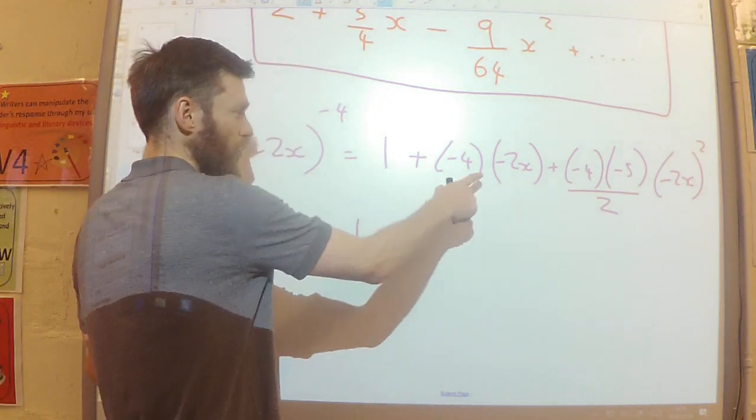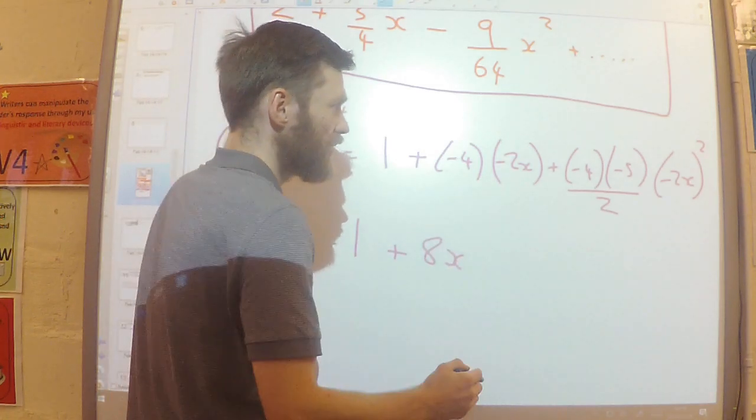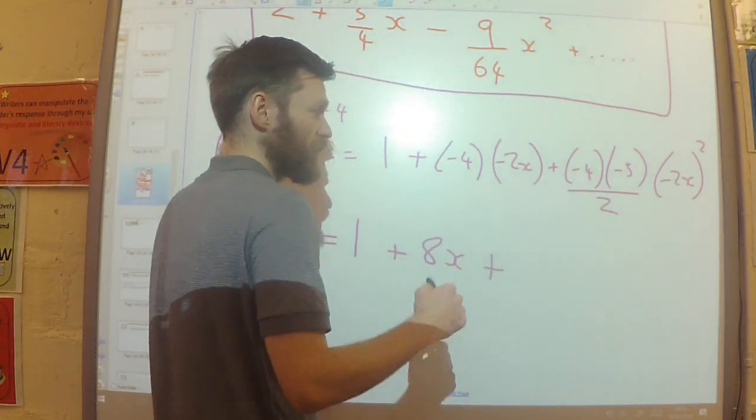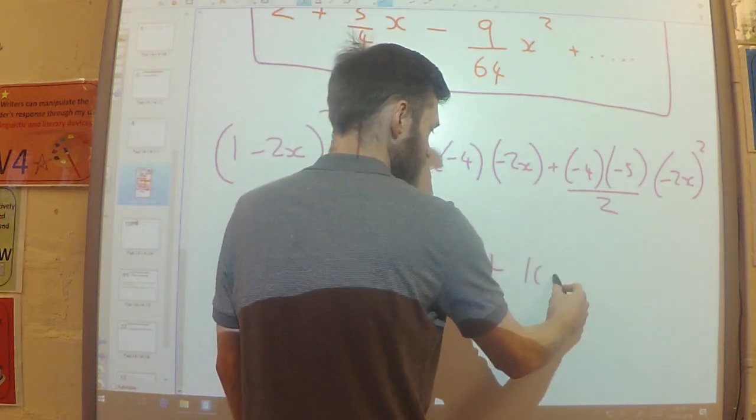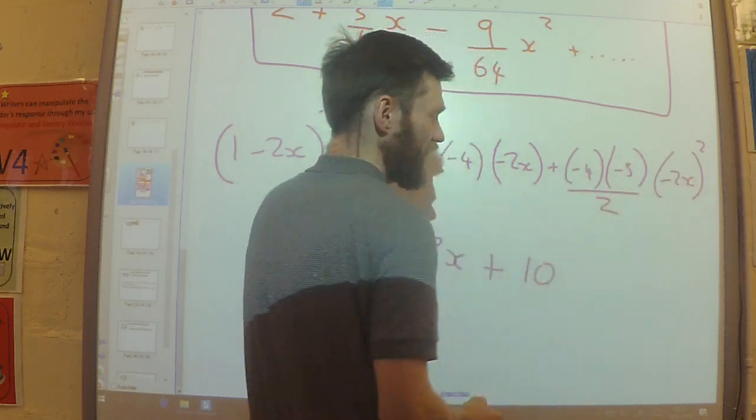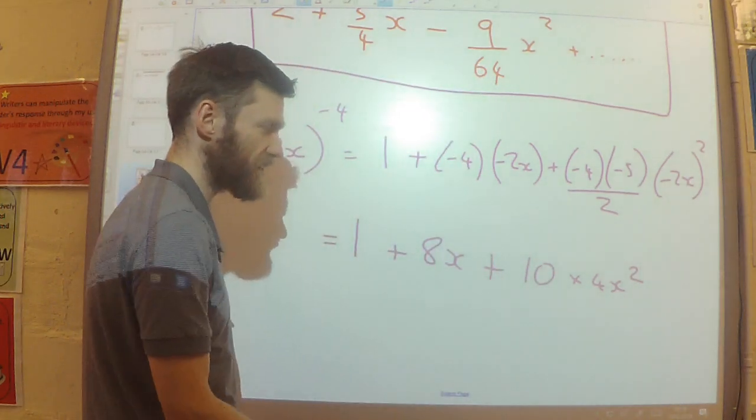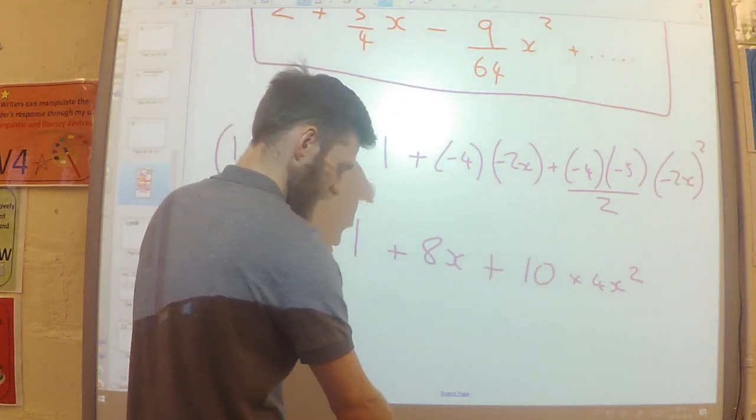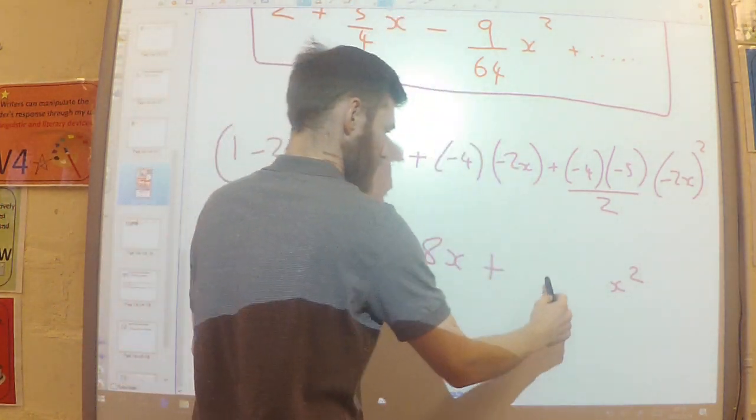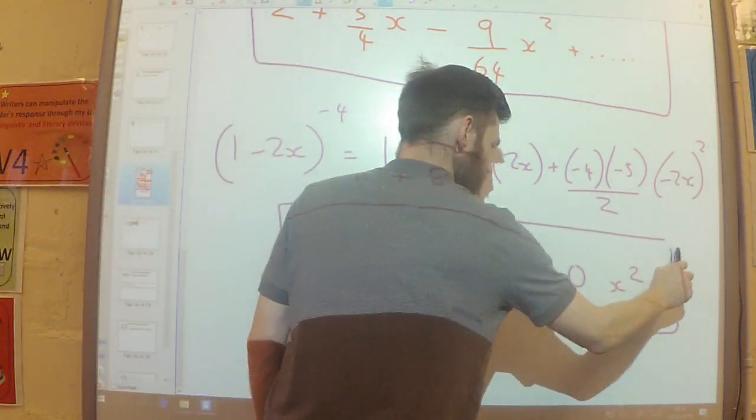So simplifying this, we've got 1 plus 8x. Again, this is going to be another plus, because the minus 4 times the minus 5 would be plus 20, divided by 2 would be 10. And then the minus 2x all squared is going to be plus 4x squared. And then the 10 times the 4 will be 40. Okay, so there is my second expansion.